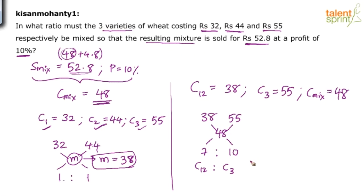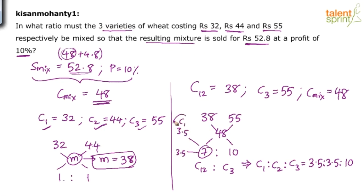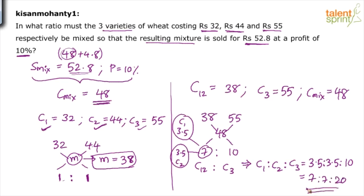Since C12 contains C1 and C2 in equal proportion (1:1), the 10 parts of C12 split into 5 parts C1 and 5 parts C2. So C1 : C2 : C3 = 3.5 : 3.5 : 10 (breaking 7 into 3.5 and 3.5 since C1 and C2 were in 1:1 ratio). Scaling up: 3.5 : 3.5 : 10 = 7 : 7 : 20.